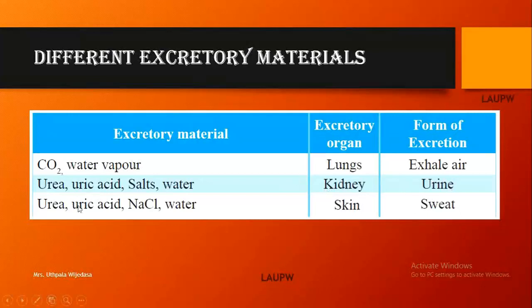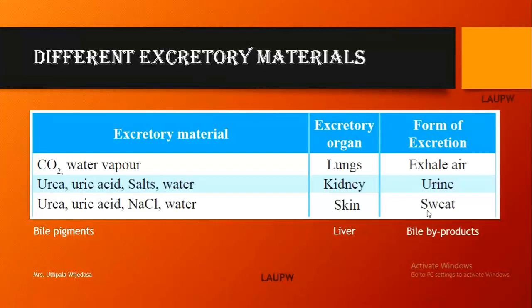Urea, uric acid, and mainly sodium chloride and water are removed from the skin in the form of sweat. In addition to these, there are bile pigments released from the liver in the form of bile by-products. The main organ that carries nitrogenous waste is the kidney.